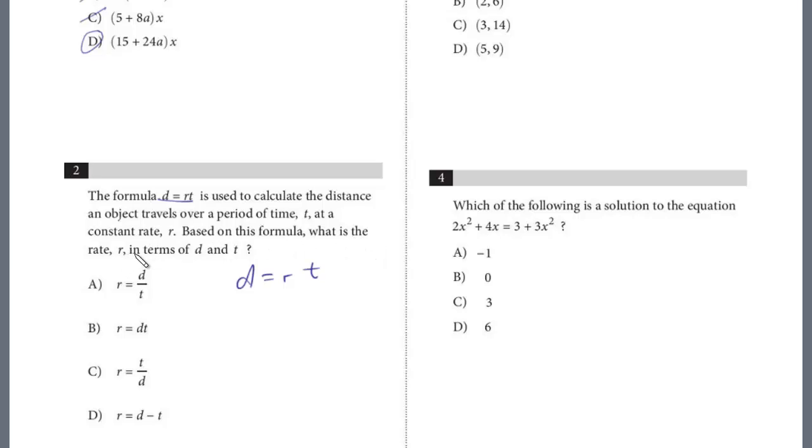It's just literally one step to isolate R. We divide both sides by T, and we get D over T, and that's it. And so, the answer for number 2 is A.